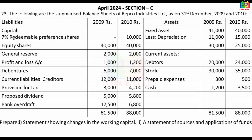The liabilities side includes: 7% redeemable preference shares, equity shares, general reserve, profit and loss account, debentures, current liabilities including creditors, provision for tax, proposed dividend, and bank overdraft.